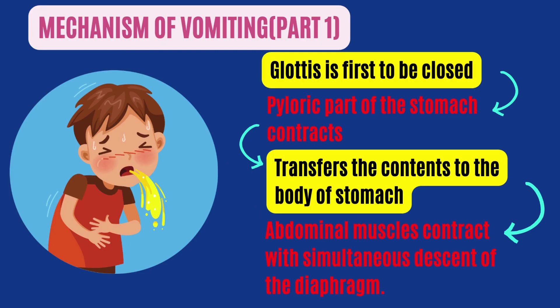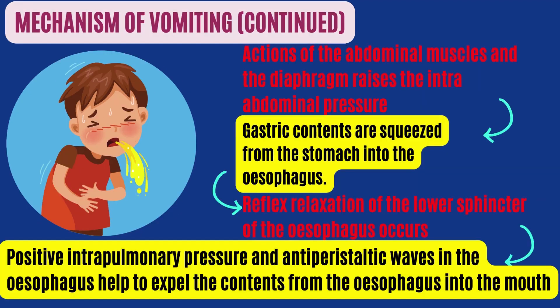We now know different causes of vomiting. We will now focus on the mechanism of vomiting. At the onset of vomiting, the glottis is first to be closed. Next, the pyloric part of the stomach contracts and as a result transfers the contents to the body of the stomach. The abdominal muscles contract with simultaneous descent of the diaphragm. These actions raise the intra-abdominal pressure to such an extent until the gastric contents are squeezed from the stomach into the esophagus.